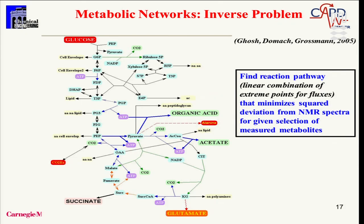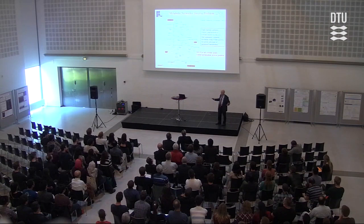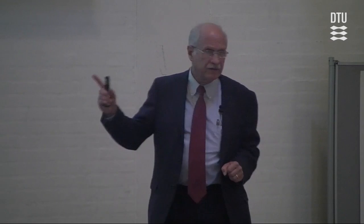Work I did with my colleague Mike Domach at Carnegie Mellon on metabolic networks shows how PSE tools can be applied. Given a metabolic network, you want to find the reaction pathway that minimizes deviation from spectra obtained from NMR measurements. Finding all possible pathways means finding all extreme points of a mixed-integer linear program defined by flux analysis of this network. Finding the particular pathway that minimizes deviation from experimental measurements turns out to be a global optimization problem for an inverse problem — a very different type of application using these tools.